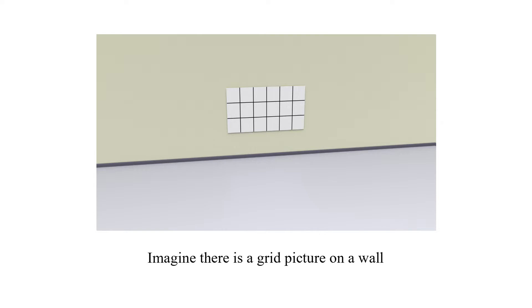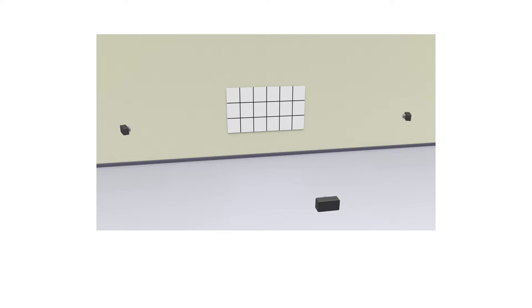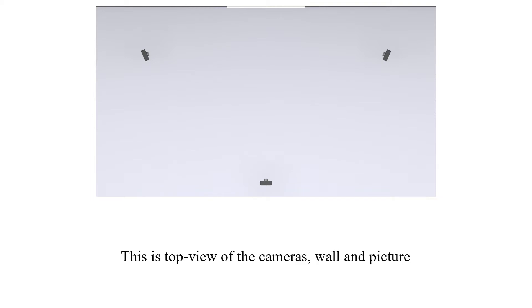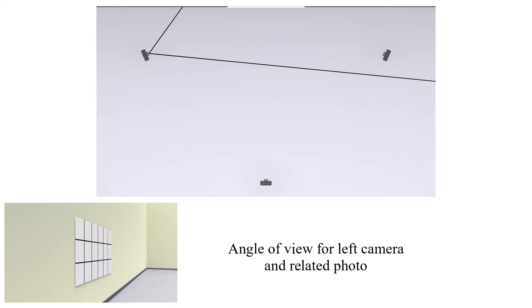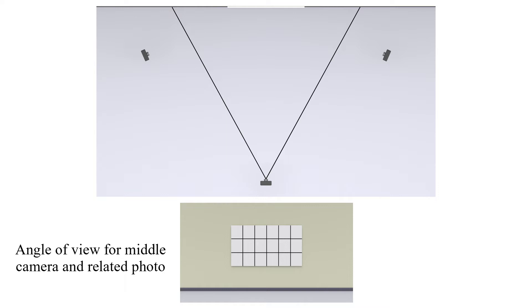Imagine there is a grid picture on a wall. Three photos of the picture are taken. These are the camera positions. Let's view the scene from the top. This is the top view of the cameras, wall, and picture. Angle of view for the left camera and related photo, the right camera and related photo, and the middle camera and related photo.